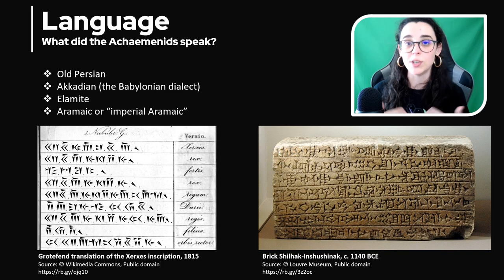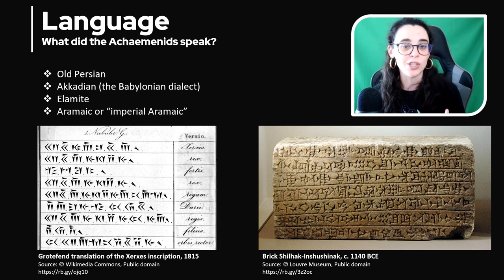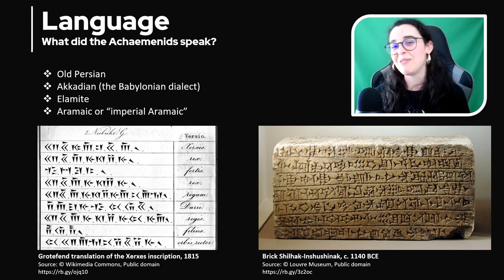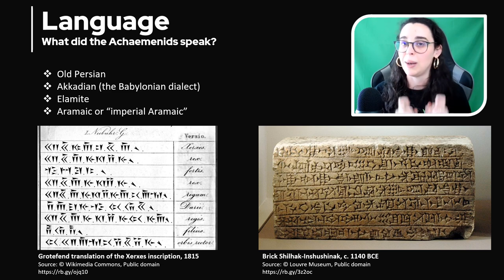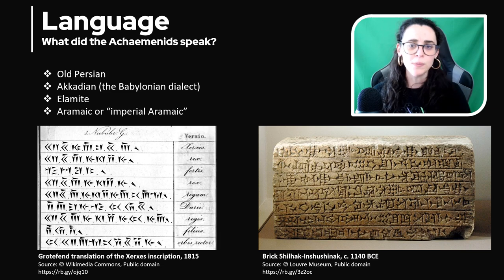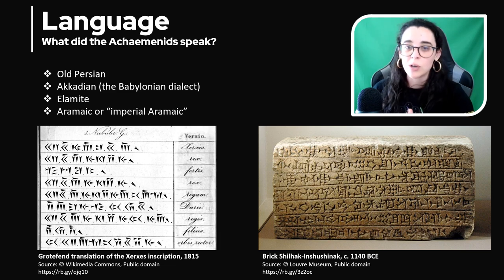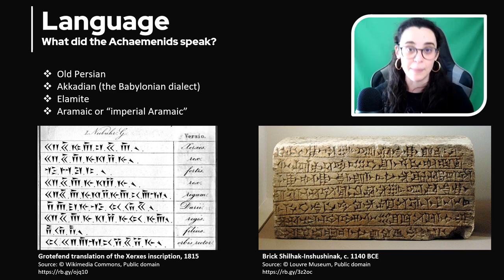What languages are these sources written in? The official language of the administration and the court was Old Persian, but in such a varied and vast empire, that was certainly not the only tongue one could hear. Other languages were also widely used, like Akkadian using the Babylonian dialect, or Elamite — in fact, Elamite was the first official language of the dynasty. Some sources were even written in Greek. Another language widely used was Aramaic, sometimes called Imperial Aramaic by scholars, because this was a vehicular tongue — a language that almost everybody everywhere could speak and use to communicate.